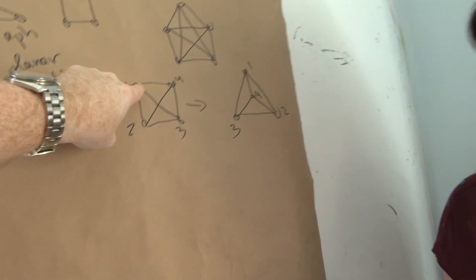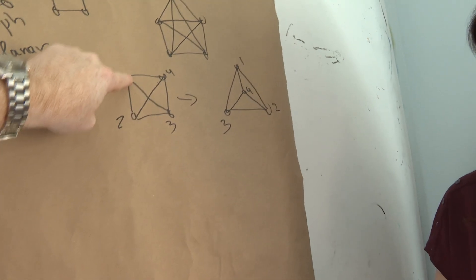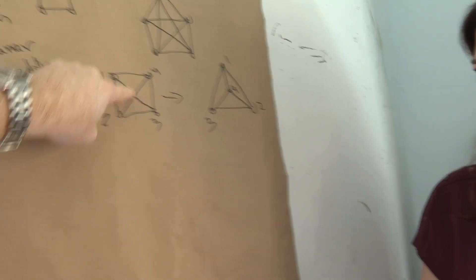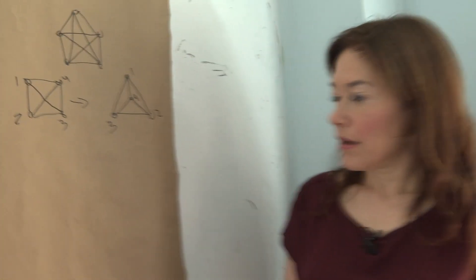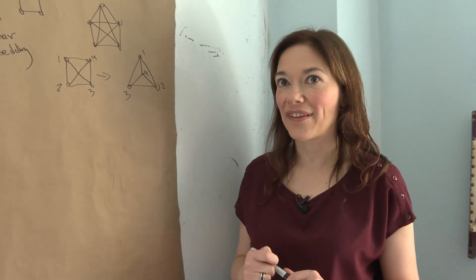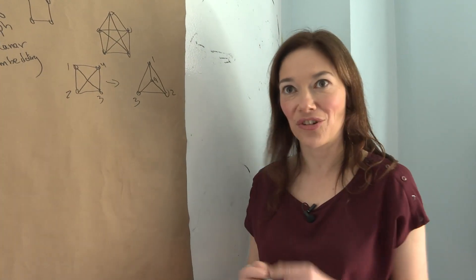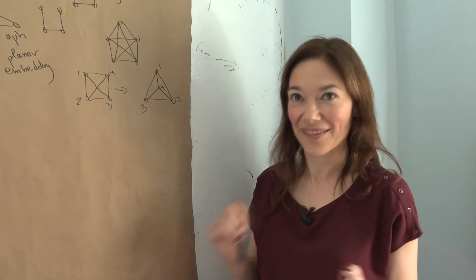Do edges have to be straight? Like, could you have kept these vertices in the same places and drawn curved lines around the place as well? Edges don't have to be straight. The theorem says that anything you can embed with curved edges, you can embed with straight edges. It doesn't matter.